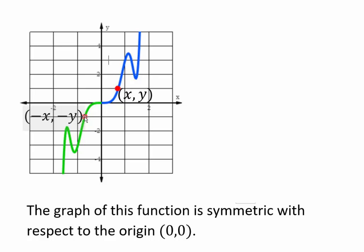If you replace x with negative x in the function and you get the y coordinate to be exactly opposite of the original y coordinate, if that happens for all x and y in the domain, then you have an odd function. So let's do a formal definition.